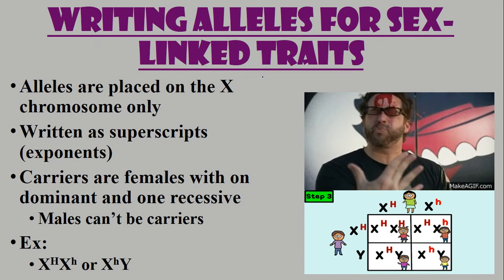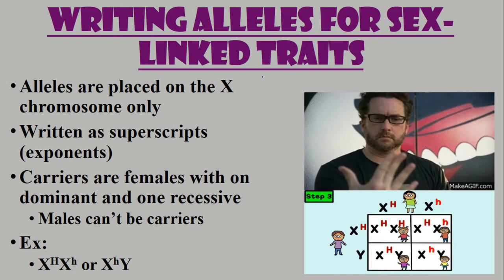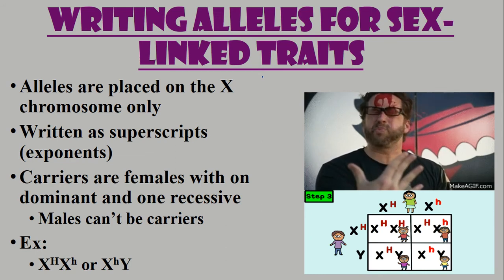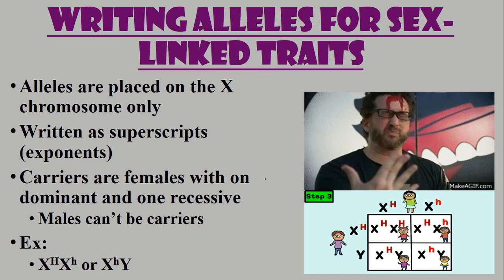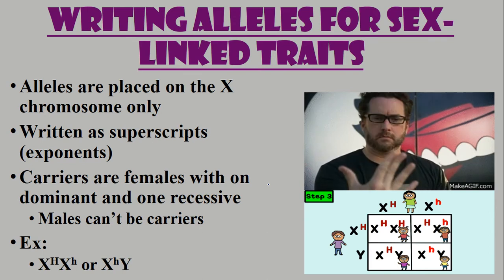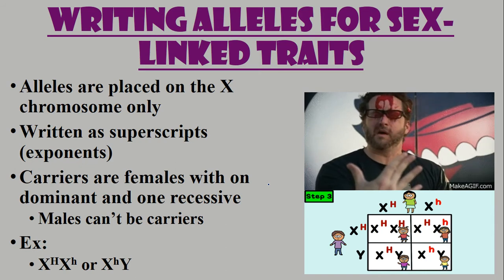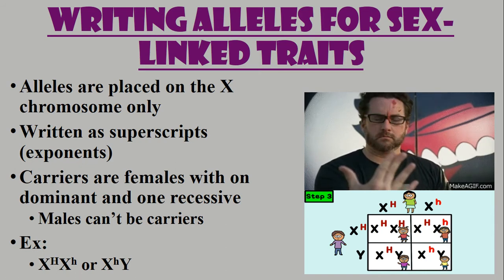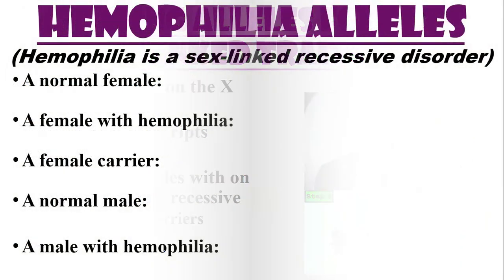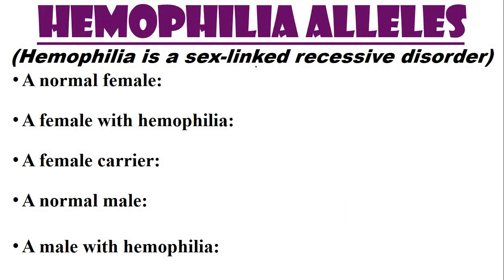Writing alleles for sex-linked traits is a little different. We use superscripts placed on all X chromosomes — capital or lowercase depending on dominant or recessive. Females can be carriers, having one dominant and one recessive superscript. Males can't be carriers. Examples: X^H X^h (carrier female), X^h Y (male with hemophilia).